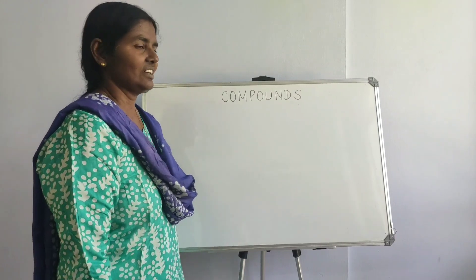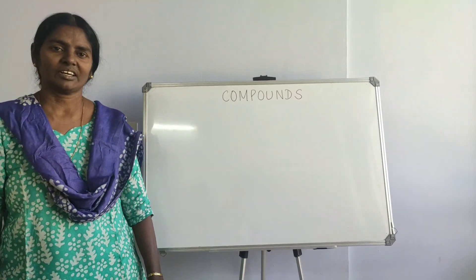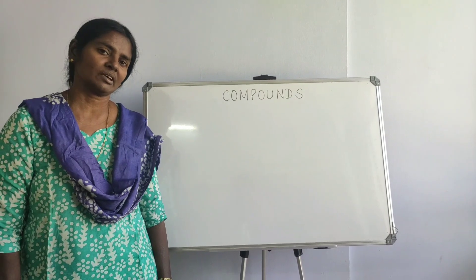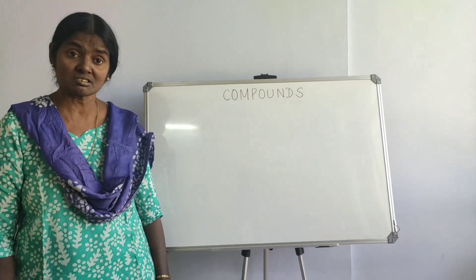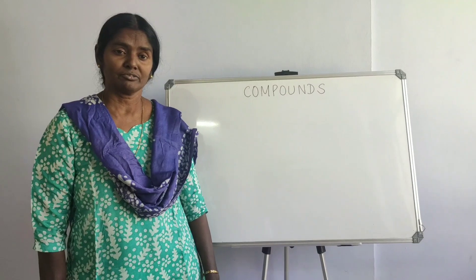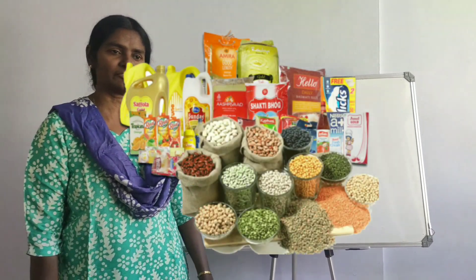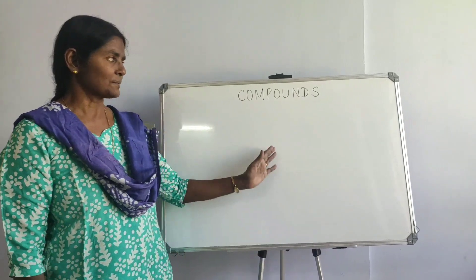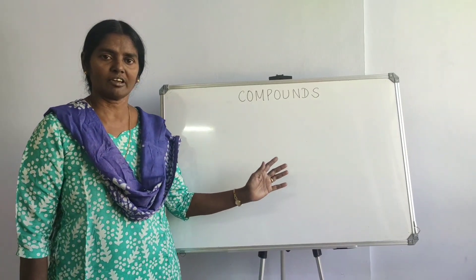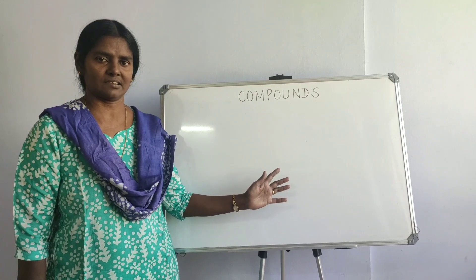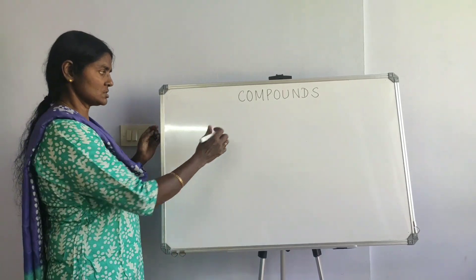Hi everyone. I thought just like we have this situation where we have to get essential commodities — you always think of rice, dal, oil which are a must for every family. There are some compounds which are essential for every industry that needs it, and there are four such compounds.